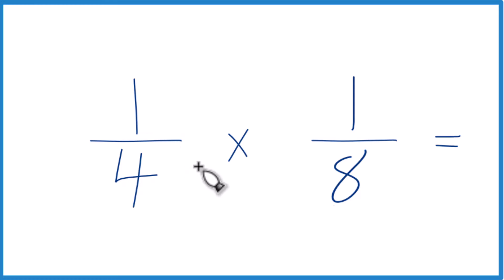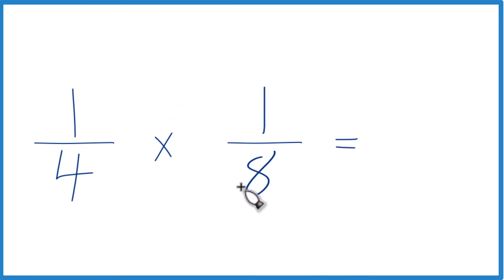You could just take the 'of' and then you could write multiplication. So instead of 1/4 of 1/8, we have 1/4 times 1/8. And that's a little bit easier.